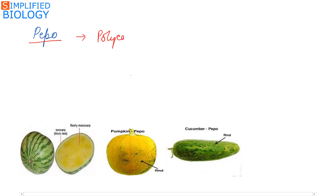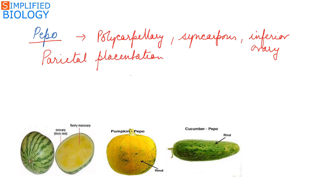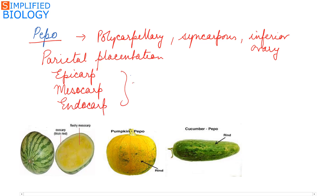The next type is pepo. The fruit develops from a polycarpellary syncarpous inferior ovary where parietal placentation is seen. The ovary is unilocular but due to the presence of a false septum it appears to be multilocular. The fruit is divided into epicarp, mesocarp, and endocarp, all of which are edible along with the seeds.